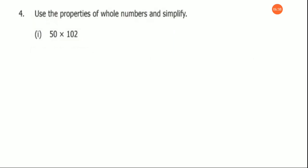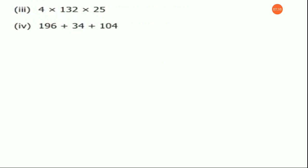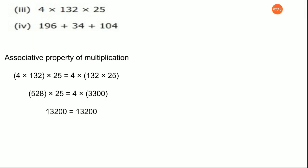Now use the properties of whole numbers and simplify. When there are two values, it is commutative property. First write the name of the property and then simplify. So 50 times 102 — the places are exchanged and then the answer is derived. For the third subdivision, three different values are involved, so associative property of multiplication is used. Use brackets, group them on both sides, and check whether both sides are equal.